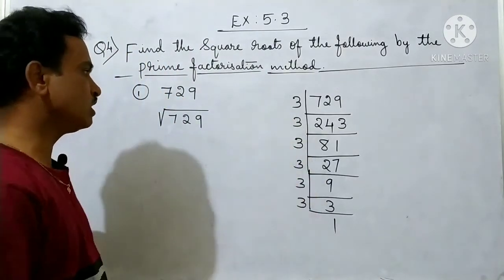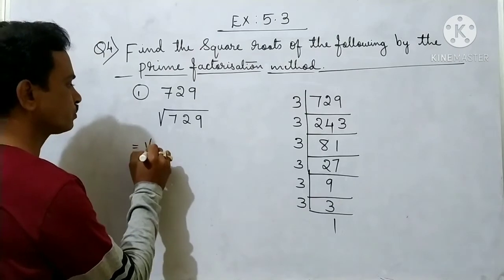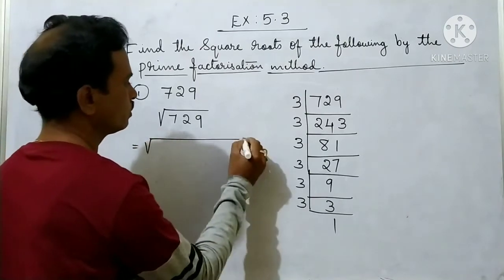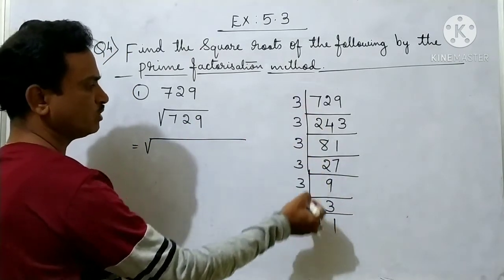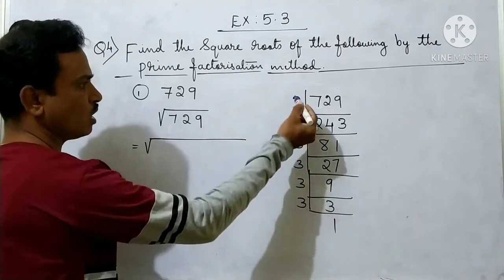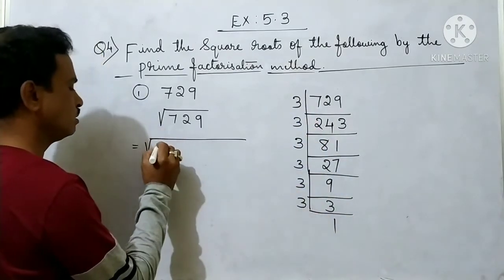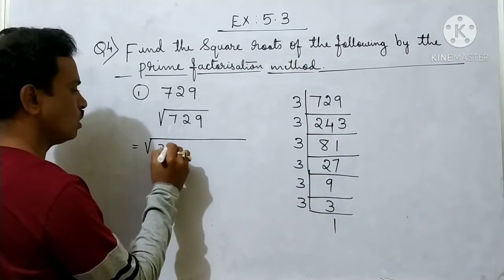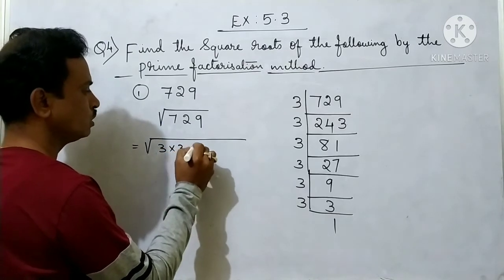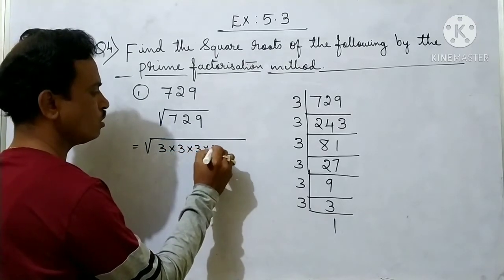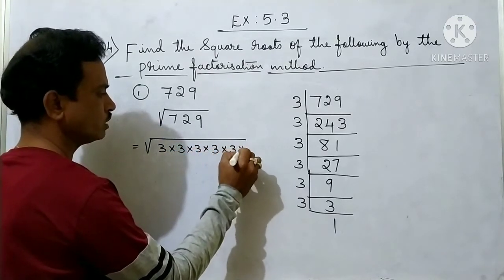So, how many 3s did we get? We just have to find that out. Looking at 729: we count 1, 2, 3, 4, 5, 6 — we got six 3s in total.